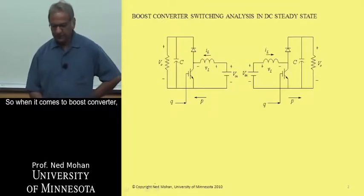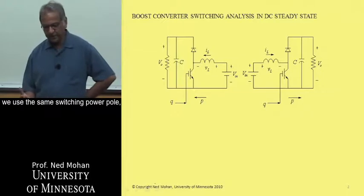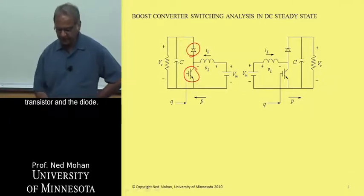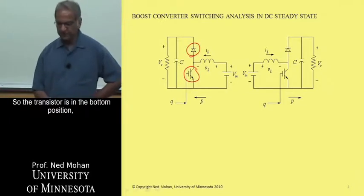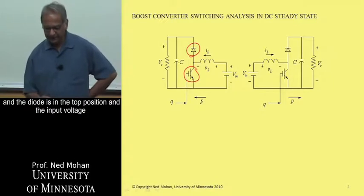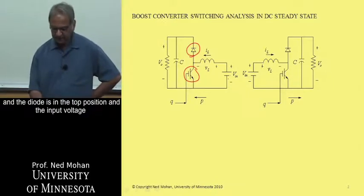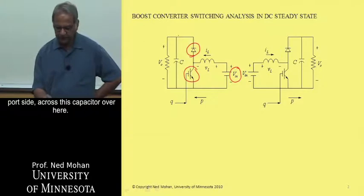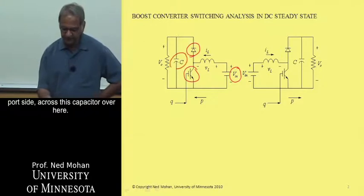When it comes to boost converters, we use the same switching power pole, except please note the positions of the transistor and the diode. The transistor is in the bottom position, and the diode is in the top position, and the input voltage is on the current port side, and the load is on the voltage port side across this capacitor over here.